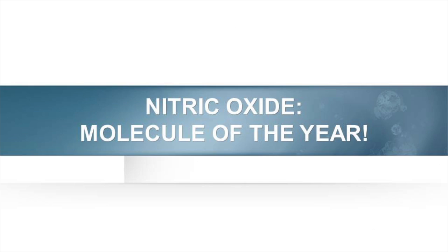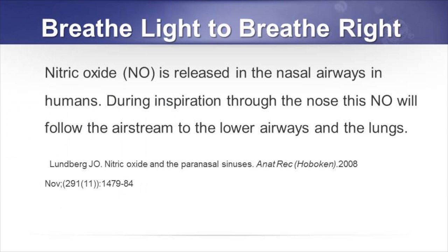When talking about normal and optimal breathing, there's an important gas we need to consider in addition to carbon dioxide, and that's nitric oxide. Nitric oxide is produced in the paranasal sinuses and is continuously released into the nasal cavity. During inspiration through the nose, this nitric oxide follows the airstream to the lower airways and to the lungs.